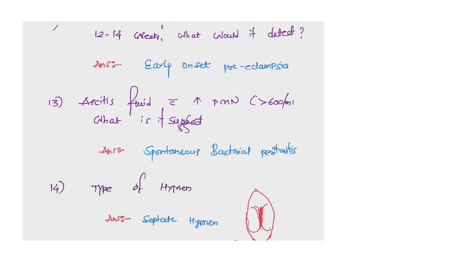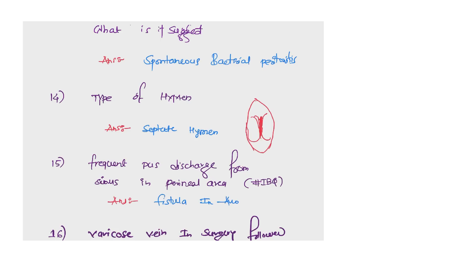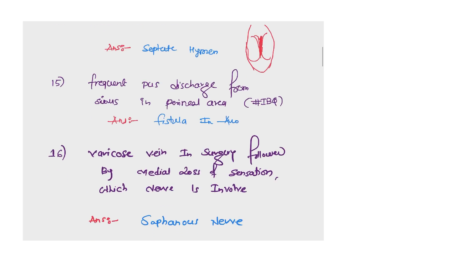The next question: ascites fluid with increased polymorphonuclear cells, that is more than 600 ml, what does it suggest? Answer is spontaneous bacterial peritonitis. Question 14: type of hymen. We know we have an image of hymen, so answer is septate hymen.